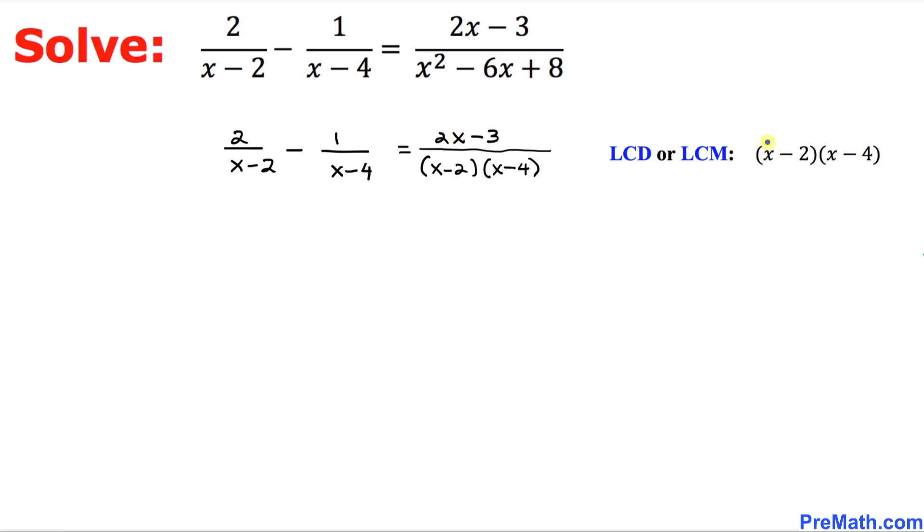And now in the next step, we are going to multiply whatever this least common denominator, x minus 2 times x minus 4, across the board. I am going to multiply x minus 2 times x minus 4 with the first fraction. Likewise, x minus 2 times x minus 4, and finally, x minus 2 times x minus 4 across the board.